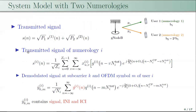In the system model, s(n) is the mixed numerology signal transmitted by the base station. It is the sum of signals s1(n) and s2(n) scaled by the square roots of their respective transmit powers p1 and p2. In 5G NR, these transmit powers can differ by 23 dB. Signal s1(n) contains user data for user 1 with numerology 1, and s2(n) contains user data for user 2 with numerology 2. The subcarrier spacing of numerology 2 is 2^mu times that of numerology 1, where mu is a positive integer.